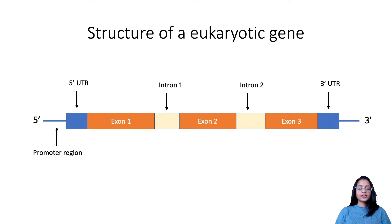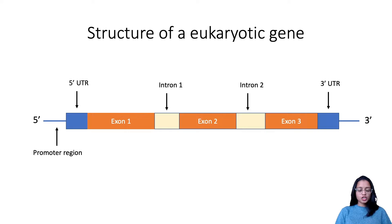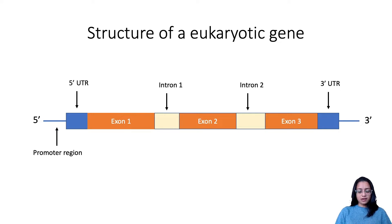Let us first start by talking about the structure of a eukaryotic gene, and it's important to talk about this before we discuss the contents of GFF3 and GTF files, which essentially store information about genomic features. The structure of a eukaryotic gene contains protein-coding sequences called exons, and these are interrupted by non-coding sequences called introns.